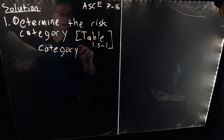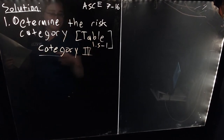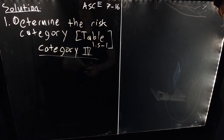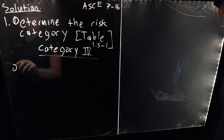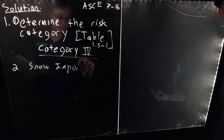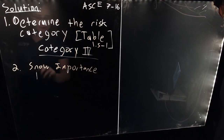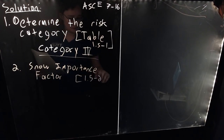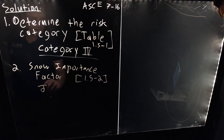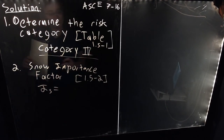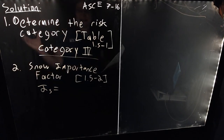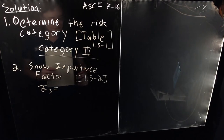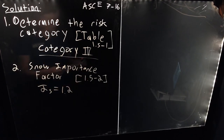Step 2 is to determine the snow importance factor IS, found in Table 1.5-2. We should not be surprised that due to the terrifying nature of the things stored in this building, our importance factor is the maximum value at IS = 1.2.